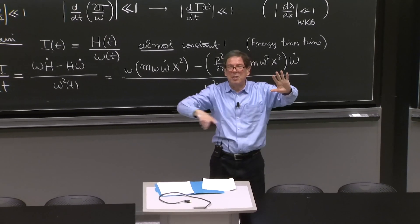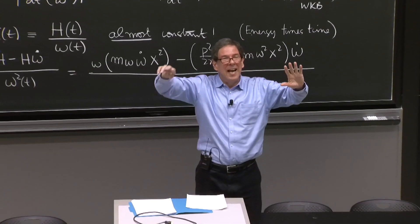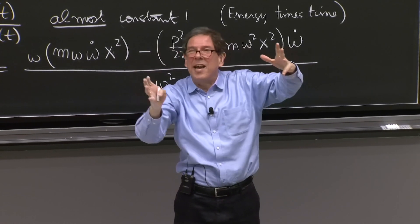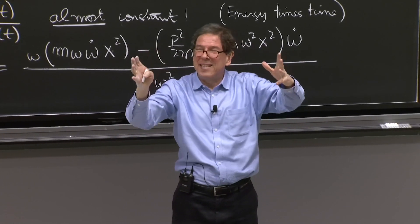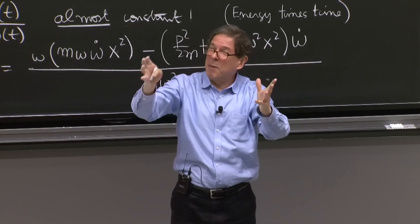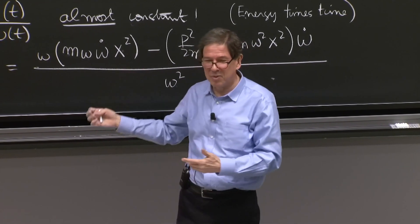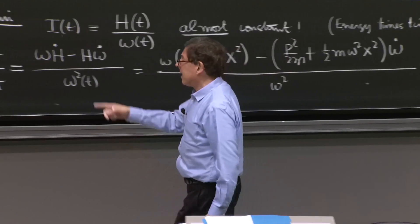You have motion in phase space. And as omega changes, maybe the ellipse will change. But the area tends to keep constant. That's what's happening. That's a statement of this result.